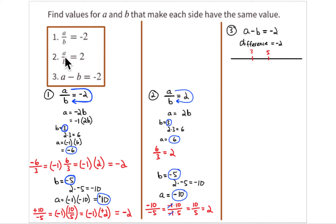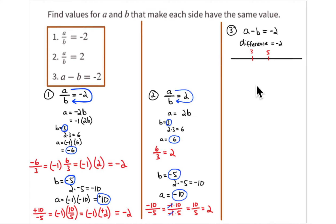The last problem uses subtraction instead of multiplication and division. The authors want you to think of this as the difference between two values — a concept from 7th grade. The difference between a and b equals negative 2. If you use 3 and 5, those are two units apart on a number line. Taking the larger value and subtracting from the smaller gives a negative answer: 3 minus 5 equals negative 2.